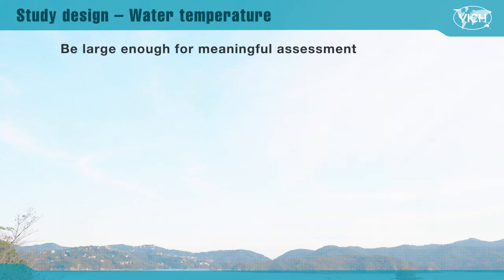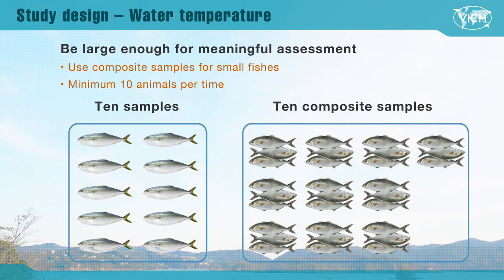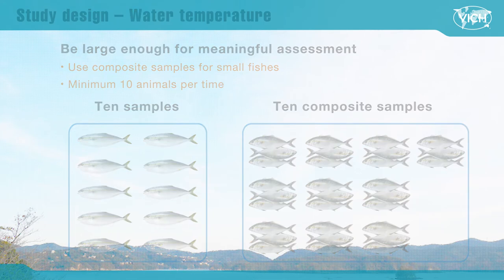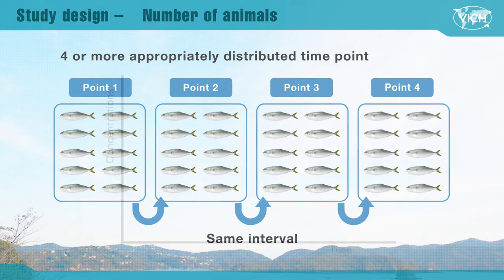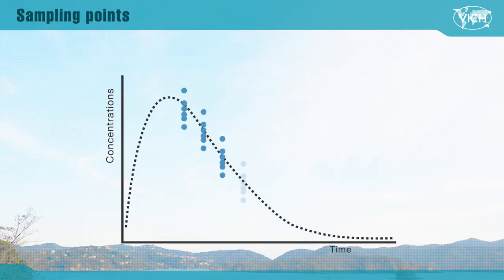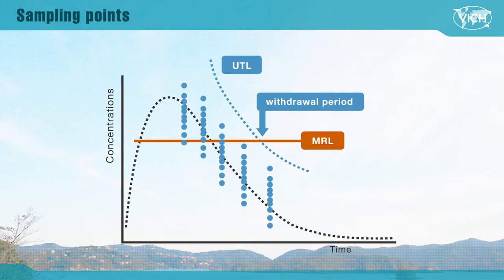The number of animals used for the test should be large enough to allow a meaningful assessment of the data. At least 10 animals per time point is recommended. If the amount of tissue is not sufficient for the assay — for example, from one small fish — then tissues from multiple animals to make a composite of 10 samples for each time point can be considered. Animals should be euthanized at a minimum of four appropriately distributed time intervals. There is some biological variability in residue; if larger variability exists, UTL will be at a much higher level than the actual residue. Increasing the number of samples could make the gap between UTL and actual residue narrower, and thus might result in a better defined withdrawal period.